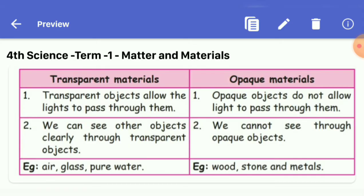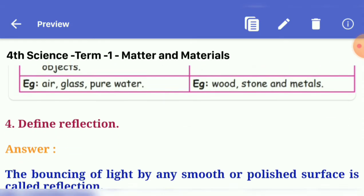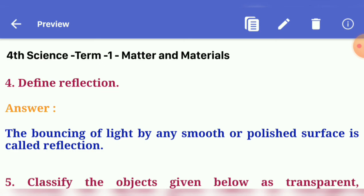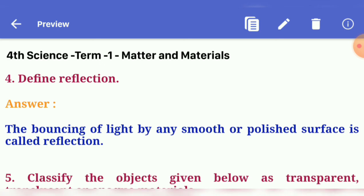Example: air, glass, pure water. Wood, stone, and metals. Next, fourth question: define reflection. Answer: the bouncing of light by any smooth or polished surface is called reflection.